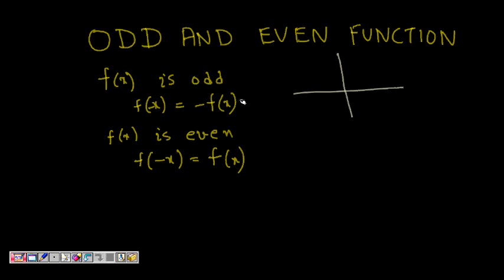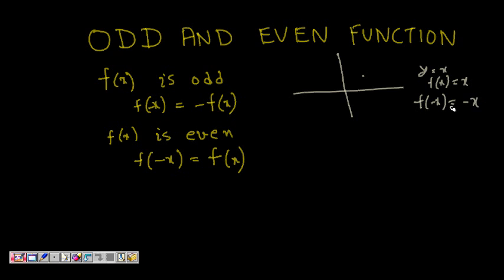If we have a function where f(-x) is equal to minus f(x), let's take the example of a straight line y = x, or f(x) = x. If we substitute x by minus x, f(-x) becomes minus x, which is minus f(x). So this means it is an odd function.